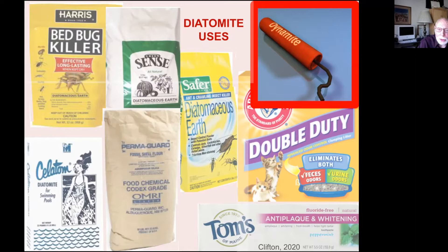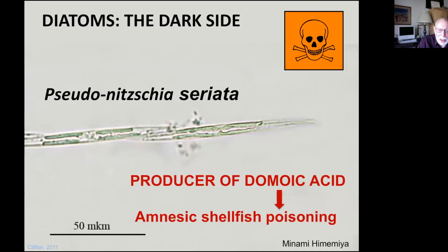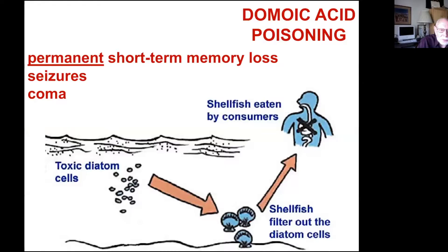Diatoms, for all their beauty and utility, have a dark side — especially the genus Pseudo-nitzschia. Pseudo-nitzschia produces domoic acid, a substance that gets into the food chain and causes amnesic shellfish poisoning in humans. It's rarely fatal but does cause permanent short-term memory loss, seizures, and coma — all from eating shellfish that had filtered out diatom cells loaded with domoic acid.